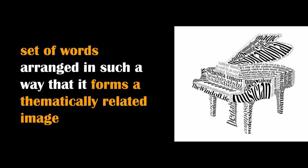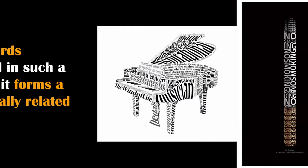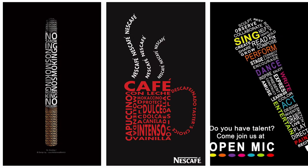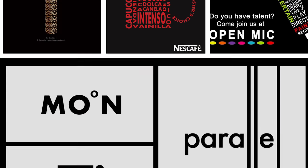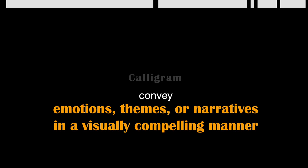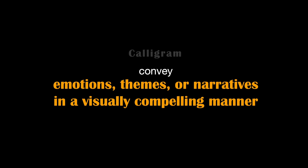A caligram is a set of words arranged in such a way that it forms a thematically related image. In this creative technique, the typography and layout play a crucial role in conveying the meaning of the words. Caligrams provide a dynamic and imaginative way to communicate messages, allowing designers to infuse artistic expression into textual content. By skillfully manipulating typography and layout, designers can use caligrams to convey emotions, themes, or narratives in a visually compelling manner.